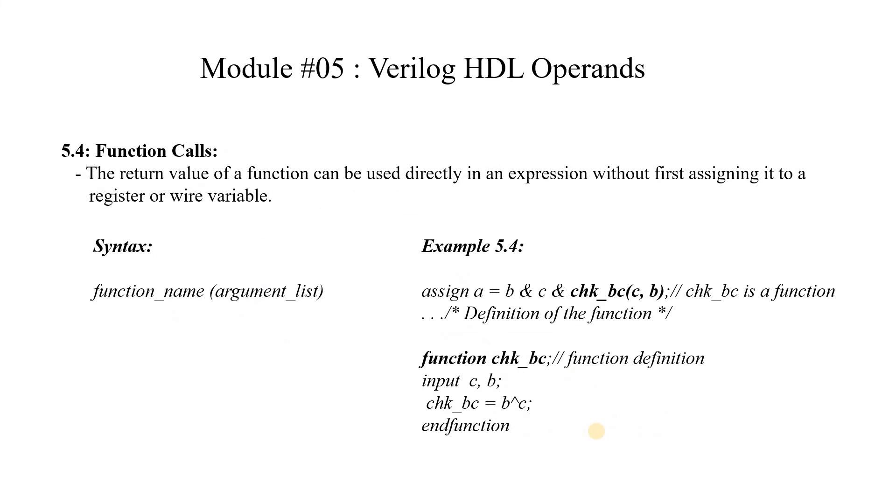Now the next type of operand is a function call. This is an important point. The return value of a function can be used directly in an expression without first assigning it to a register or wire variable. This means a function name can be directly used as an operand. The syntax is the function name and the argument we are going to pass to the function.